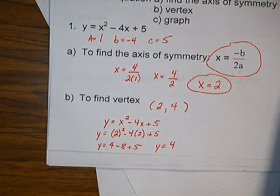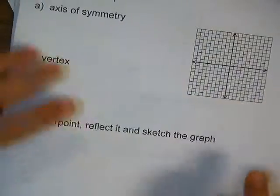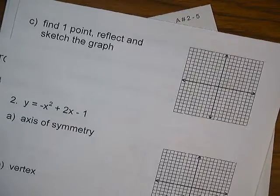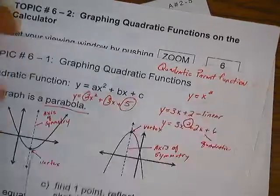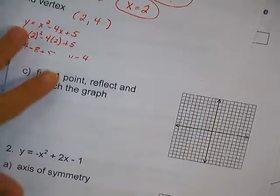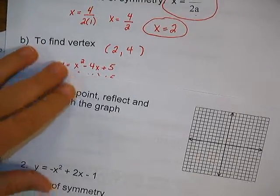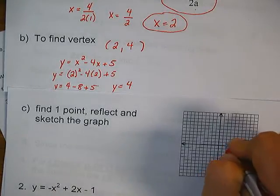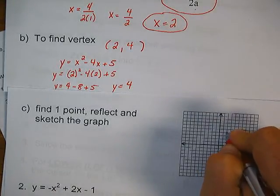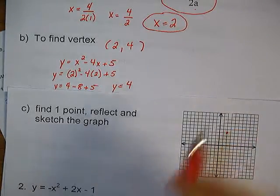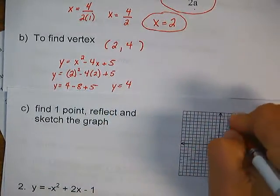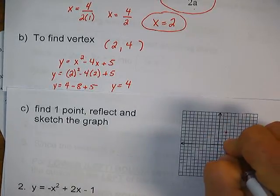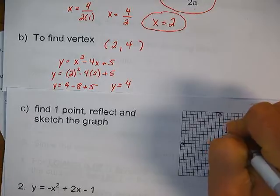Let's go over to the next page and put everything we know so far onto the graph. We know the vertex — my vertex is at 2, 4. My axis of symmetry is x equals 2; it's a vertical line that crosses the x-axis at 2. I'll just draw a dotted vertical line. There's my vertex.